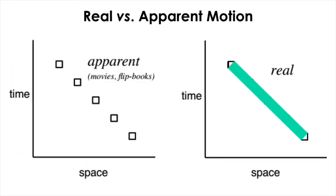This is an illustration of how apparent motion is different from the real motion when plotted on the space-time diagram. On the left, we have an apparent motion and real motion on the right, and the points are discrete in the apparent motion compared to the continuous real motion.